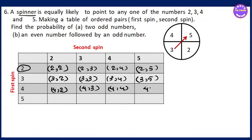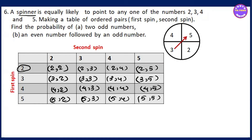Continuing: 4,5. Then 5,2 — 5,3 — 5,4 — 5,5. Those are all the ordered pairs in the sample space.